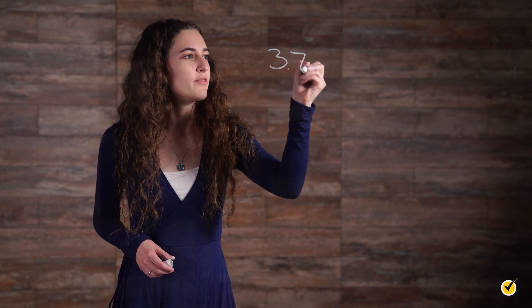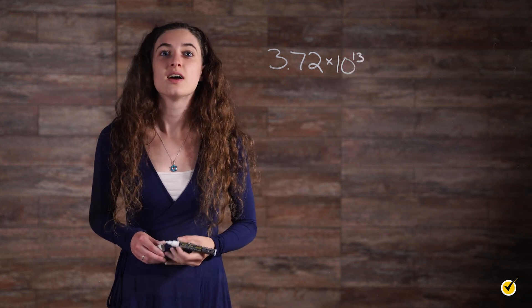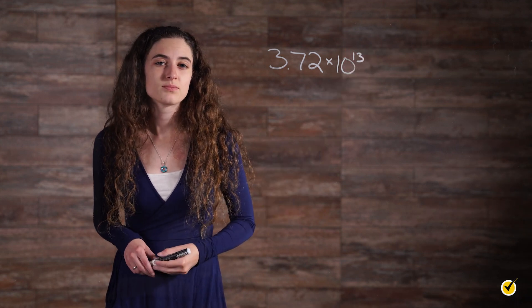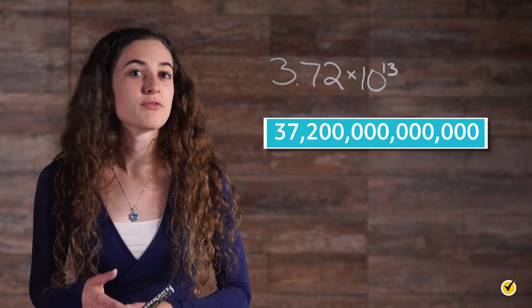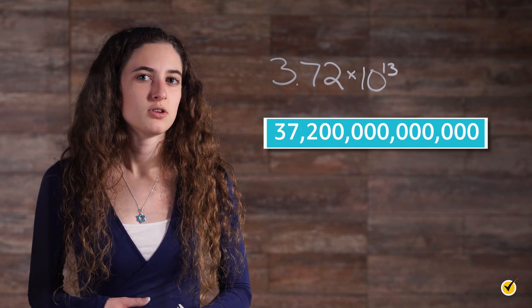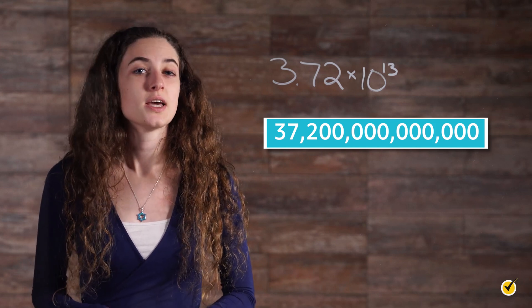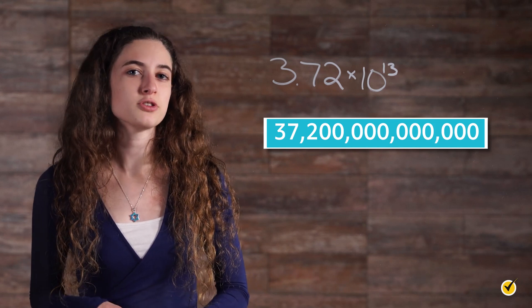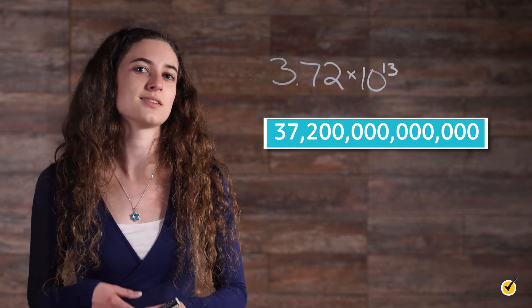On average, there are 3.72 times 10 to the 13th cells in the human body. Express this number in standard form. The exponent 13 tells us that we have 13 numbers after the decimal, which gives us 3.72 followed by 11 zeros. If we multiply this by 10 13 times, we see that there are 37.2 trillion cells in the human body.